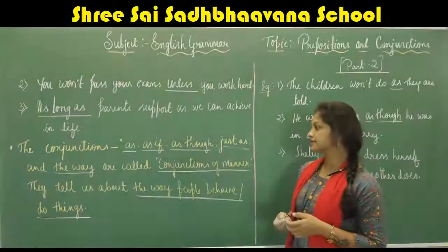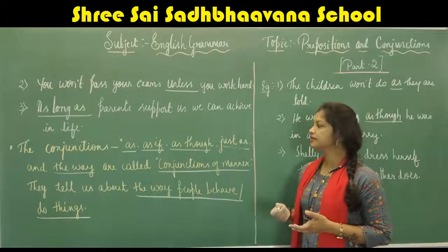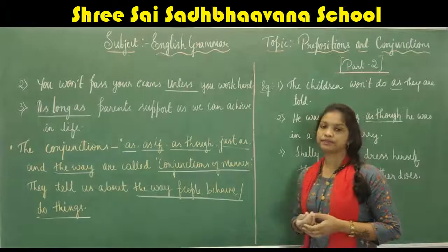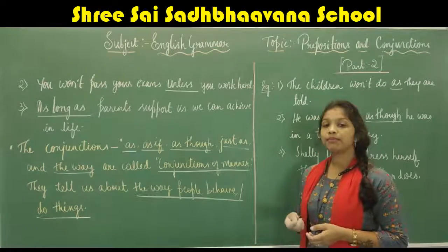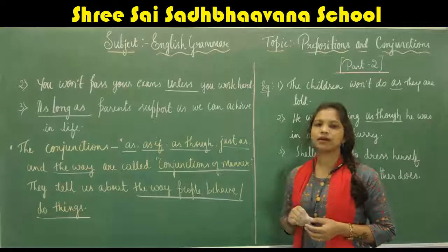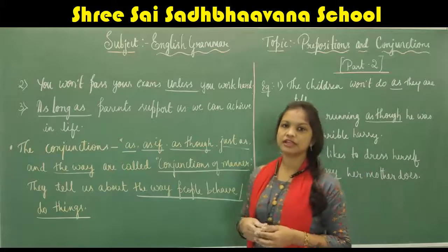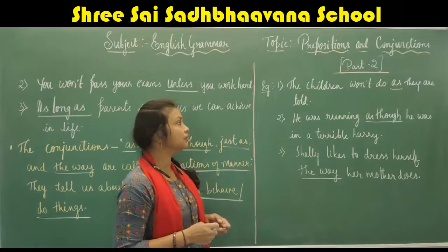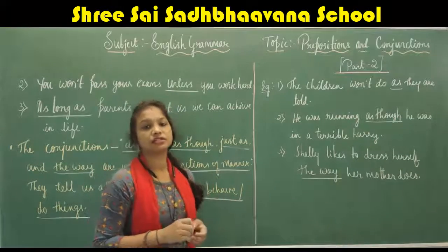The conjunctions 'as', 'as if', 'as though', 'just as', and 'the way' are conjunctions of manner, because they tell us about the way people behave or the way people do things. Example: 'The children won't do as they are told.' Here 'as' is a conjunction of manner.